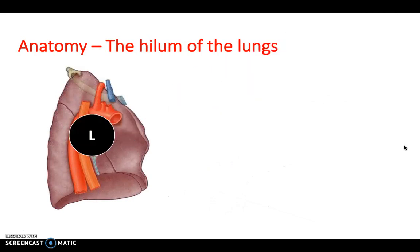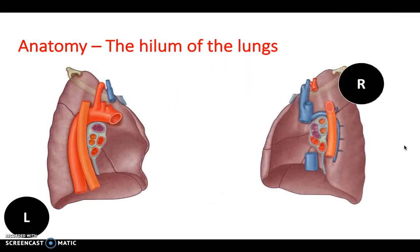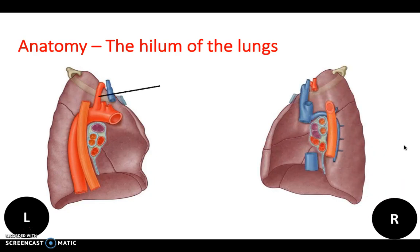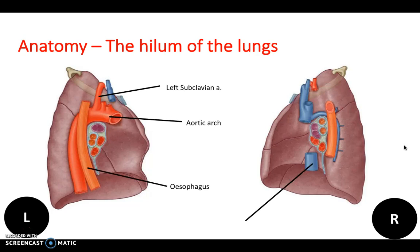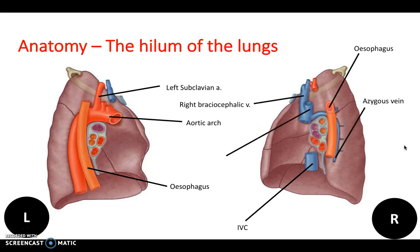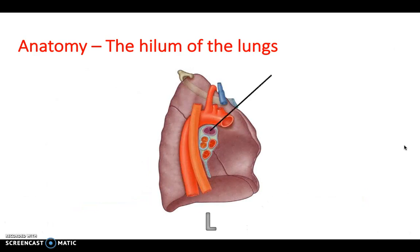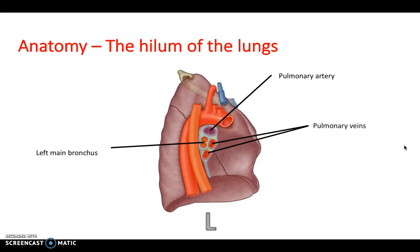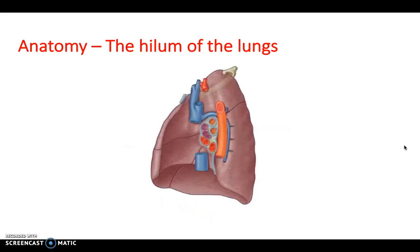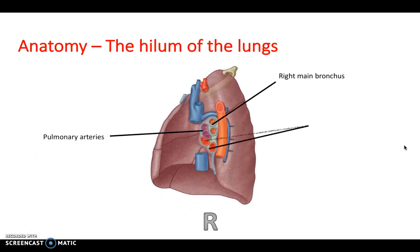Looking at the hilum of the lungs: this is the left lung, and this is the right lung — be able to differentiate them anatomically. Structures visible include the left subclavian artery, the aortic arch, the esophagus, the inferior vena cava, and the azygous vein, plus the right brachiocephalic vein and superior vena cava. Zooming into the left lung, you can identify the pulmonary artery, the left main bronchus, and the pulmonary veins — common to both sides but with varying anatomical positions.